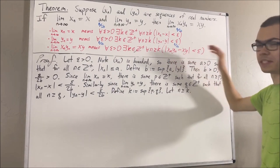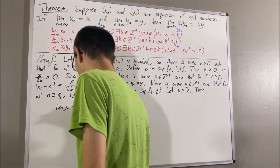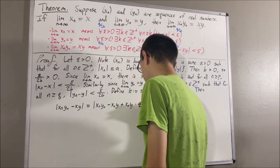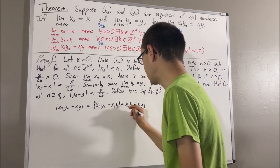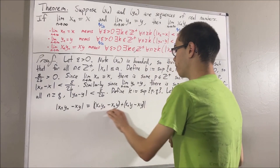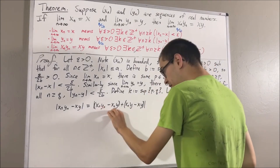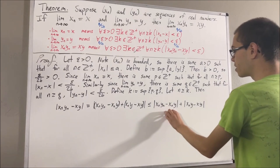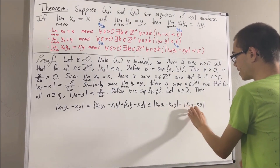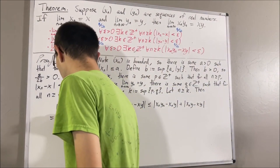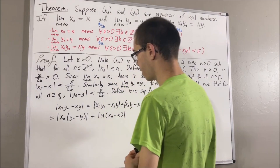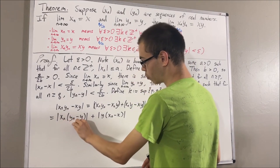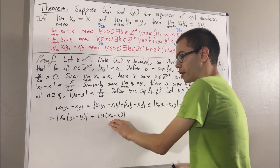Let me start off by writing the left-hand side of this inequality. I'm going to add and subtract xn times y. From here, we can apply the triangle inequality: the absolute value of this is less than or equal to the absolute value of this plus the absolute value of this. In the first absolute value, we factor out xn; in the second, we factor out y. By properties of absolute values, this is absolute value of xn times absolute value of yn minus y, plus absolute value of y times absolute value of xn minus x.